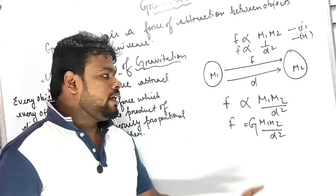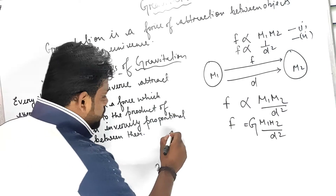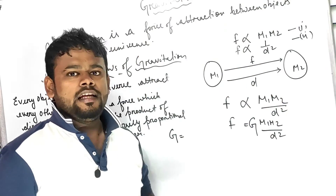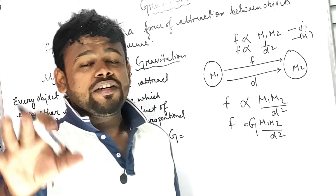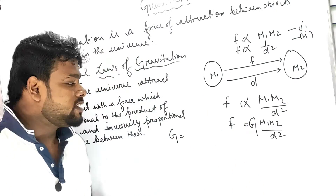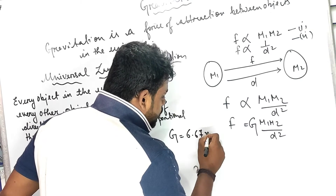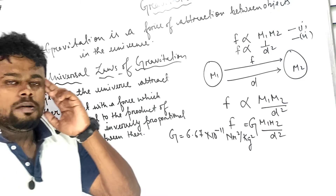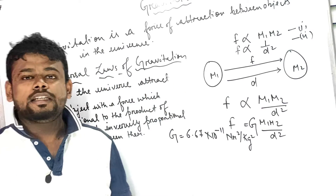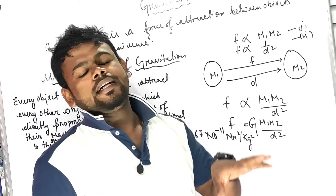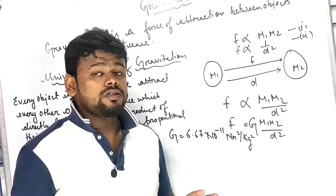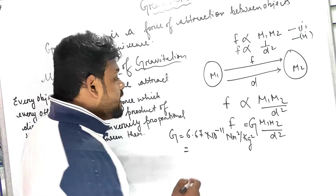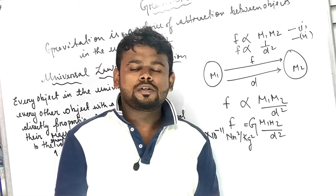The value of G is the same everywhere in the universe — whether on the Moon, on Earth, in Delhi, or in Japan. The numerical value is 6.67 × 10⁻¹¹ N·m²/kg². You can also use 6.7 as a rounded value. This G is called the Universal Gravitational Constant, denoted UGC.